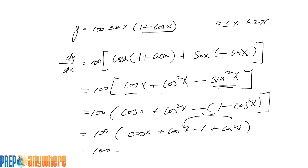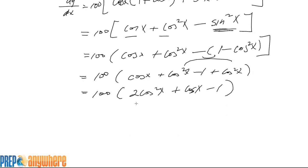So we're going to get cosine of x plus 2 cosine squared x minus 1. This is factorable.